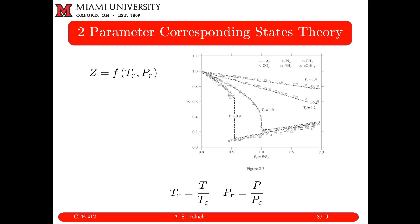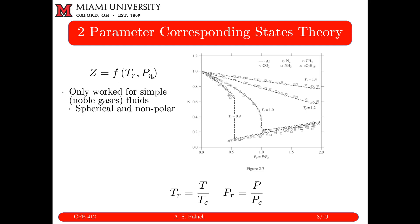This is two-parameter corresponding states theory — Z plotted with respect to two reduced coordinates. It works for simple fluids, noble gas types, and spherical non-polar molecules. It gives us the correct physical basis of corresponding states theory, but it's not as accurate as we might need for most applications.